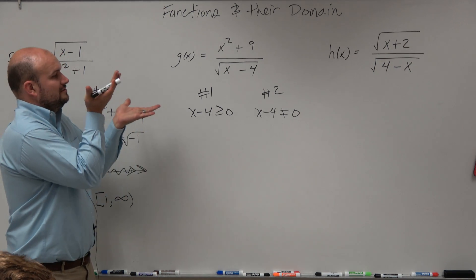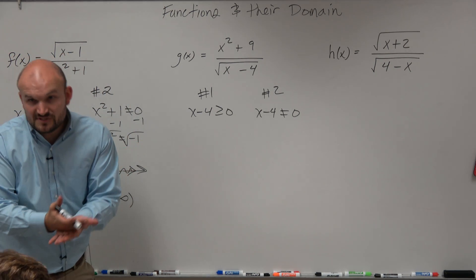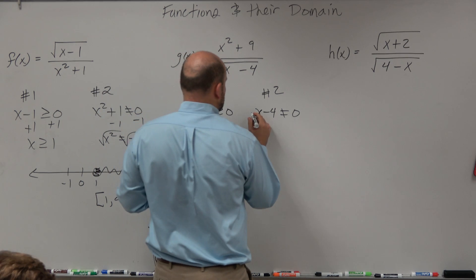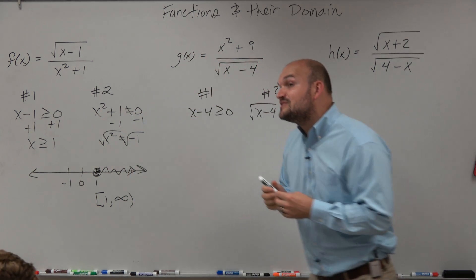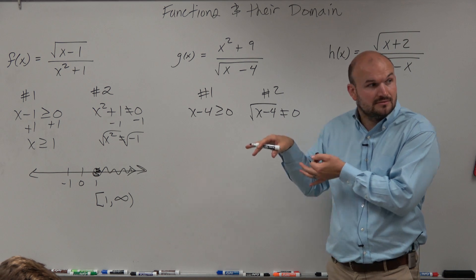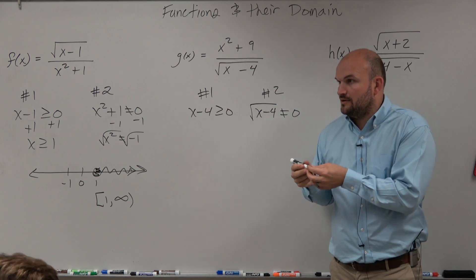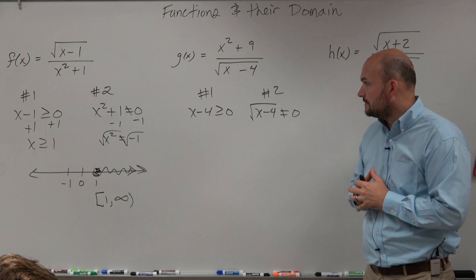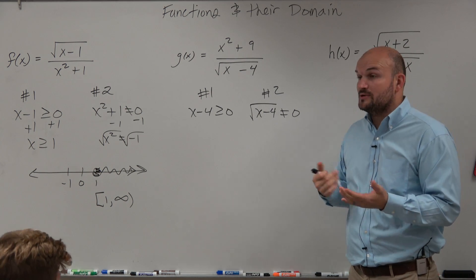You take whatever's under the radical, greater than or equal to 0. Whatever's in your denominator... oh, I'm sorry, actually it looks like this. Whatever's in your denominator, you set that cannot equal 0. Or you set it equal to 0. It doesn't really matter mathematically. OK, so now we just go ahead and solve.